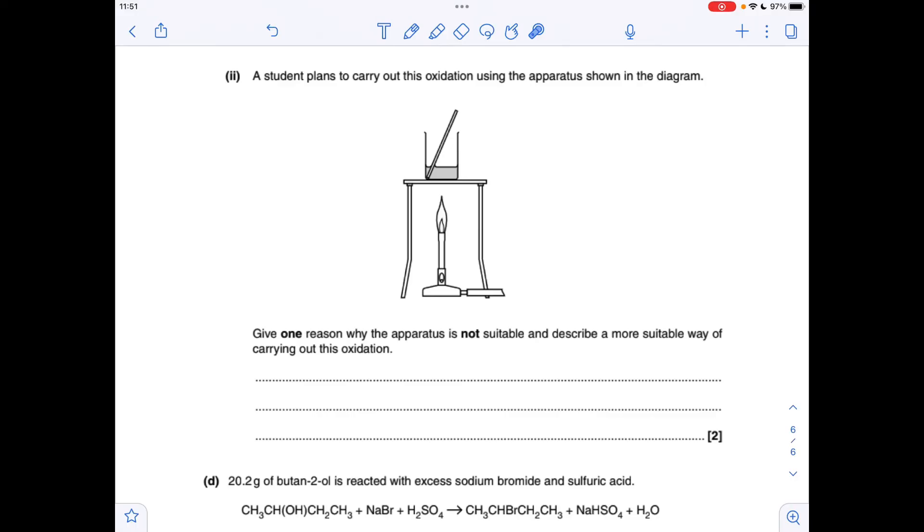Next part of the question is just a little practical skills question. So what have we got in here? We've got butane 2-ol and the oxidizing agent. Well, alcohols are volatile, they're flammable, so it's not a good idea to have this open beaker with volatile, flammable substances, especially if there's a naked flame. So a much better way to carry out this procedure would be to heat under reflux.